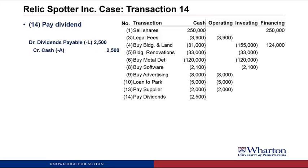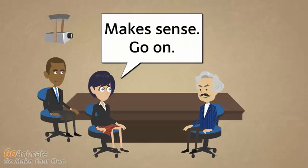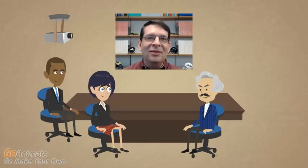In transaction number fourteen, Relic Spotter paid $2,500 cash to its shareholders for its dividend — the dividend declared in transaction twelve, paid in cash in transaction fourteen. The answer is financing — a $2,500 financing cash outflow. Paying dividends is one of the examples we use to define a financing activity.